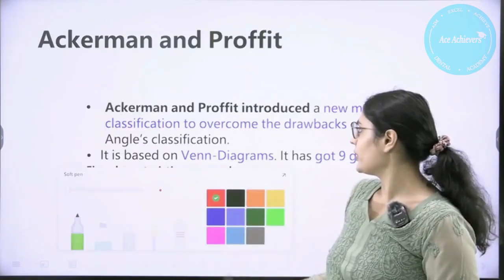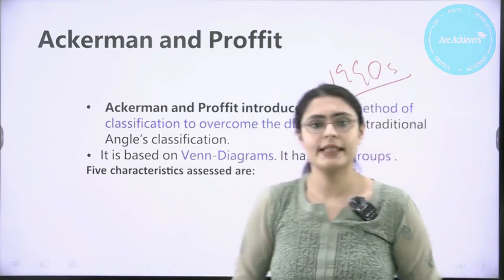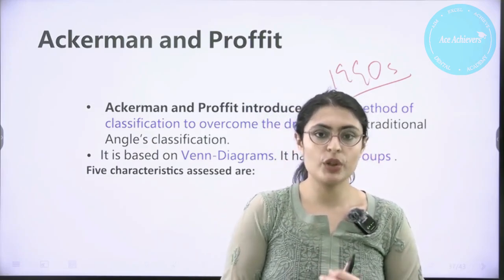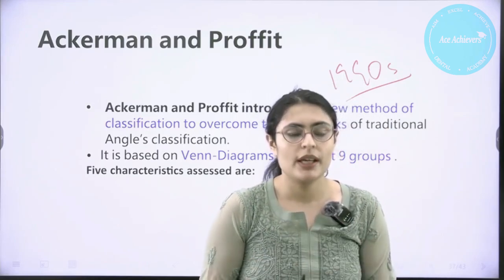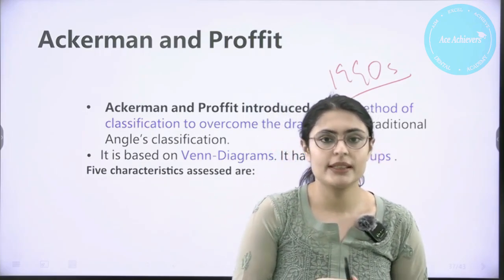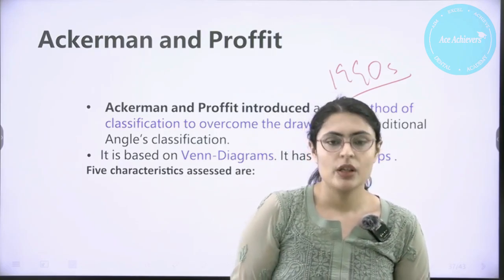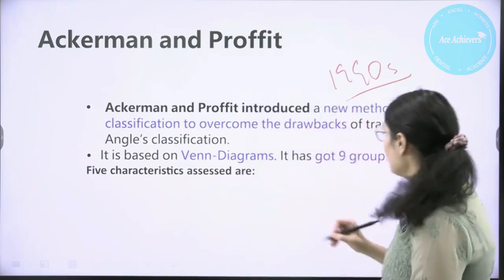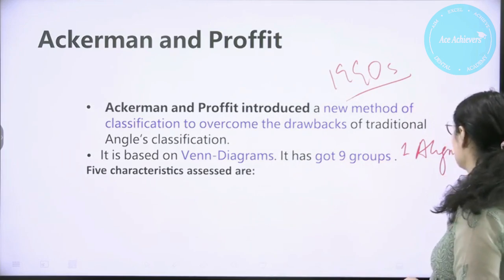The Ackermann-Profit classification was given in the 1990s. At that time, computers were being introduced on a large scale and dentists needed a classification compatible with computer record-keeping. The Angle classification did not provide enough detail about the patient's malocclusion. So Ackermann-Profit used Venn diagrams, which were very compatible with computer systems. They used five characteristics: first, alignment — crowding and spacing of the arches; second, profile — concave, convex, or straight; third, transverse relationship; fourth, class or sagittal relation (Class 1, 2, 3 by Angle); and fifth, vertical relation — deep bite or open bite.